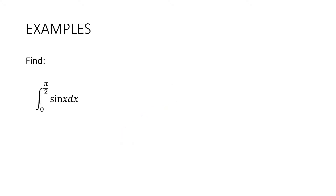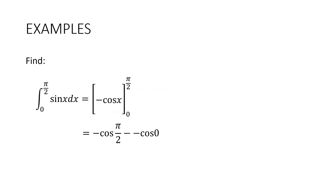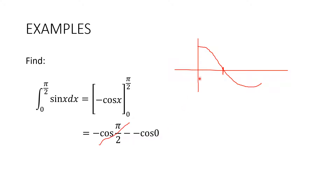Next, the integral between 0 and pi over 2 of sin x dx. When integrating sine, think about differentiation: differentiating cos gives negative sine, so integrating sine gives negative cos x. Substituting in: negative cos of pi over 2, minus negative cos 0. Cos of pi over 2 is 0, and cos 0 is 1, so we get negative negative 1, which is positive 1.